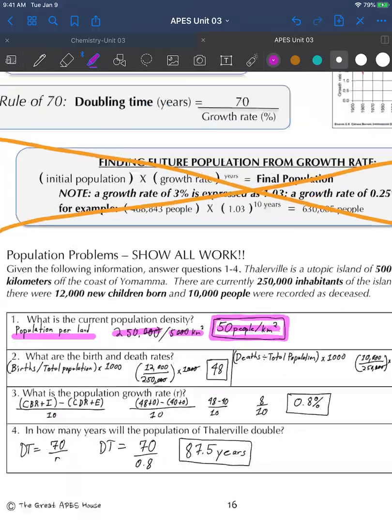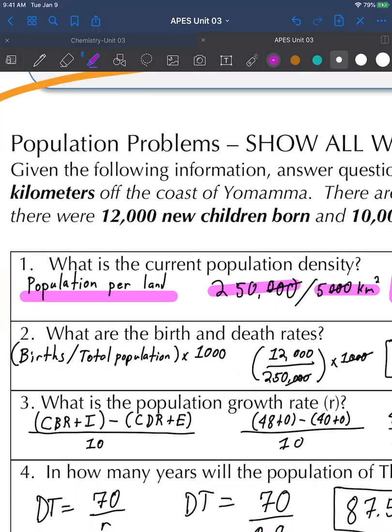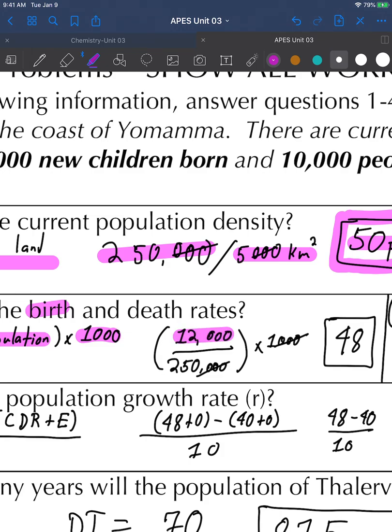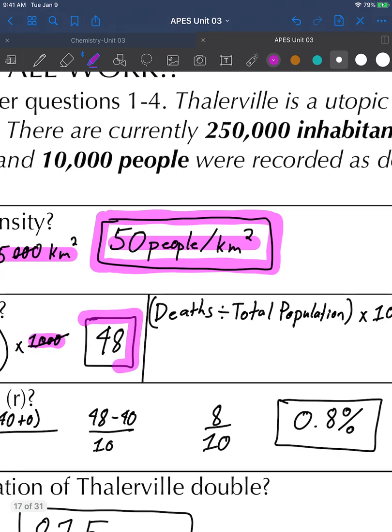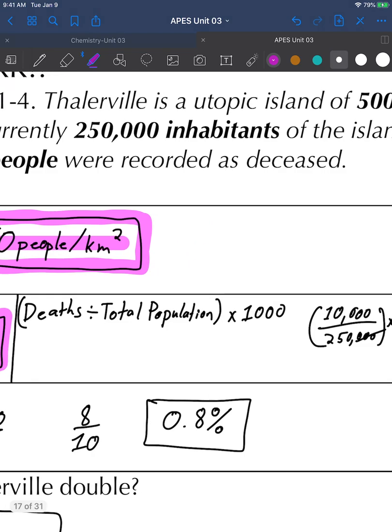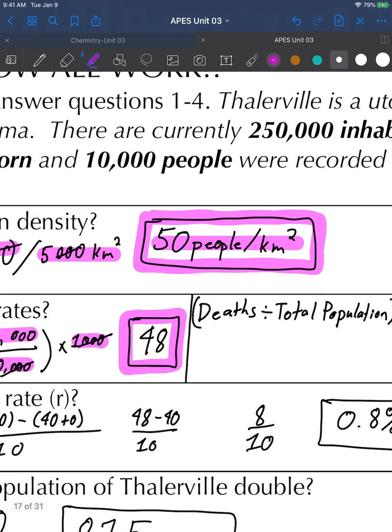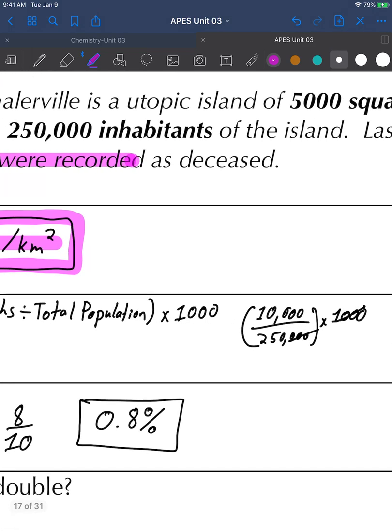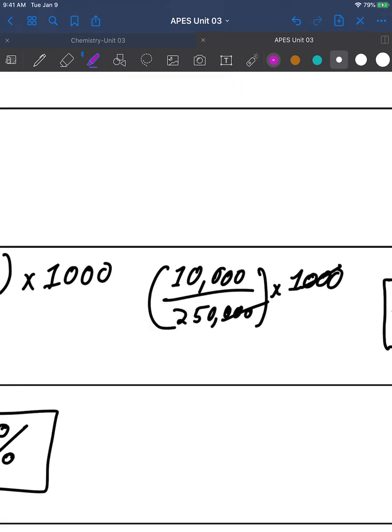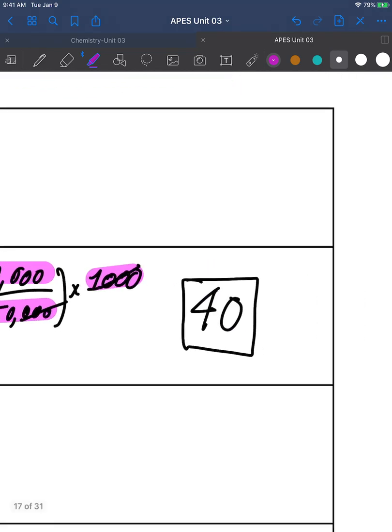Birth and death rates. Birth is births divided by total population times 1,000. We had 12,000 births, total population of 250,000 times 1,000 gives us 48. Deaths - same thing but substitute births with deaths. 10,000 was our deaths, total population is still 250,000 times 1,000, gives us 40.